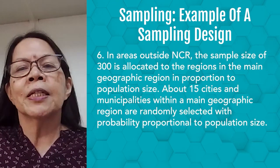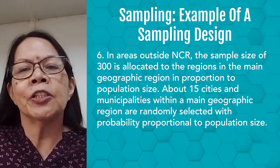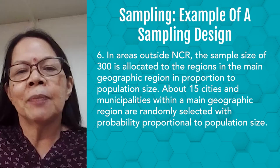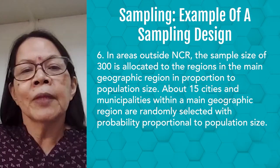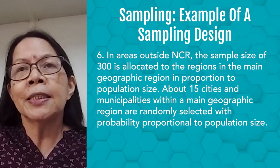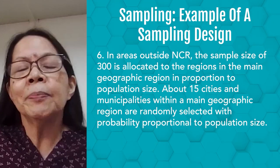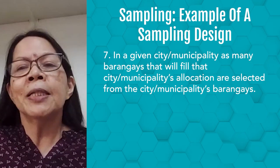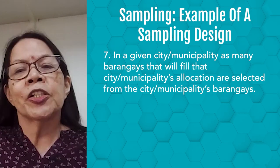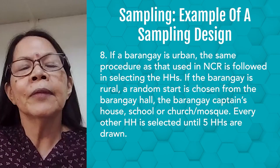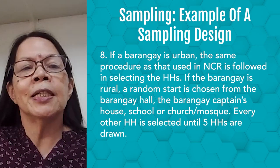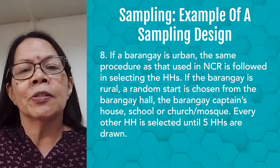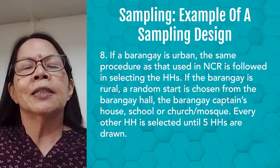In areas outside NCR, the sample size of 300 is allocated to the regions in the main geographic area in proportion to population size. About 15 cities and municipalities within a main geographic region are randomly selected with probability proportional to population size. In a given city or municipality, as many barangays as needed to fill that allocation are selected. If a barangay is urban, the same procedure used in NCR is followed in selecting households. If the barangay is rural, a random start is chosen from the barangay hall, the barangay captain's house, school, or church or mosque, and every other household is selected until five households are drawn.